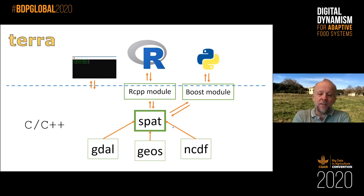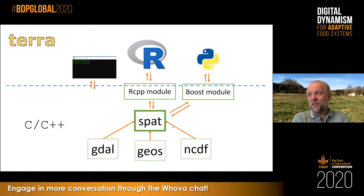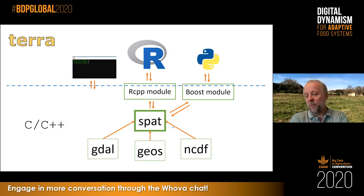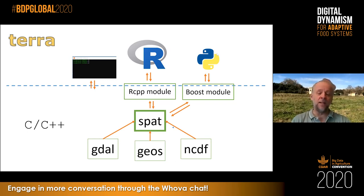Why is it faster? What's different in essence? The Terra package really is a C++ program. Central to it is what I call the SPAT library that uses GDAL, GEOS, and NetCDF at the C++ level — these are standard C libraries. All the analytical functions are also in C++, and because of that they're really fast. Then there's a thin RCPP module wrapper layer that allows communication with R.